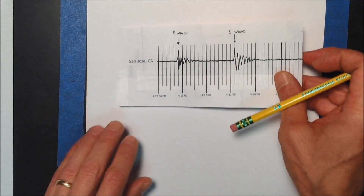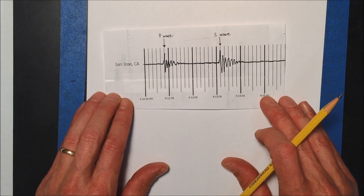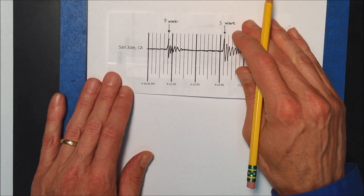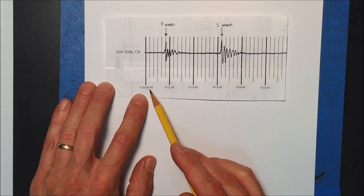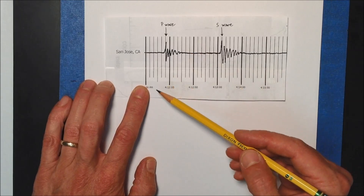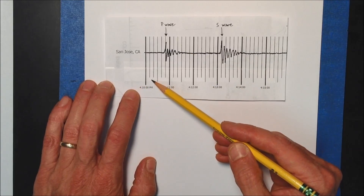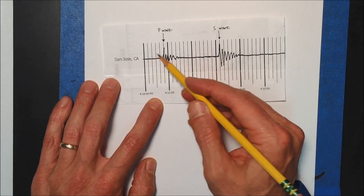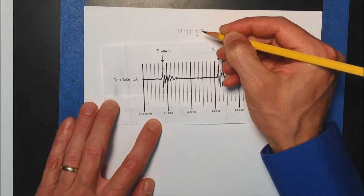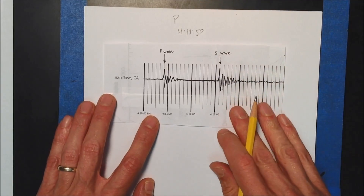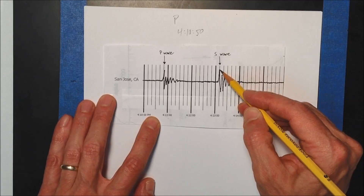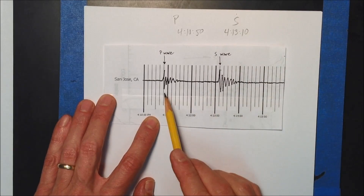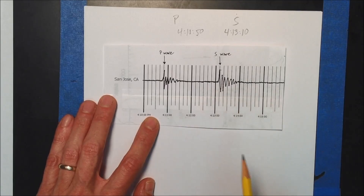The first one we're going to do is from San Jose, California. So the P wave and then S wave arrive, so we've got to figure out the time difference. The P wave arrived at 4:10:50. And then the S wave arrived at 4:13:10. And you want to figure out the time difference between the P wave arrival and S wave arrival at this particular station.